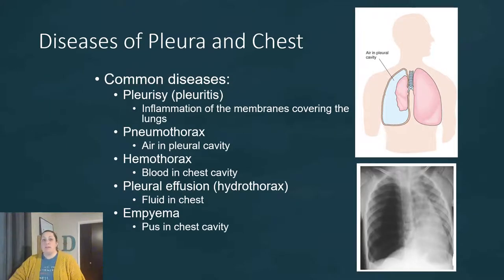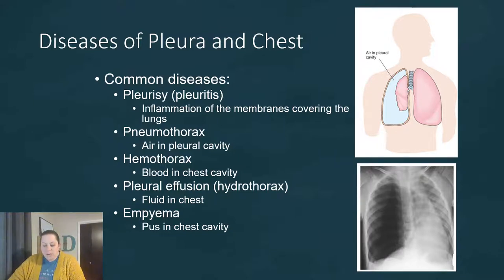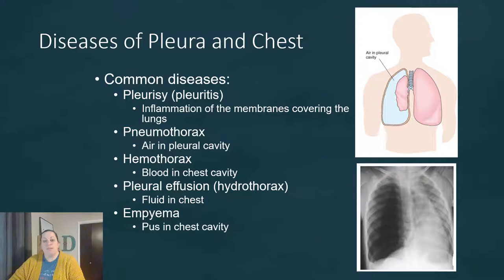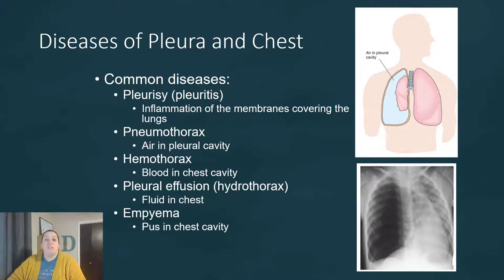The most common pleural disease is pleuritis, or pleurisy, which is inflammation of the membranes covering the lungs. This causes a friction rub — a squeaking noise you can hear when listening to the chest — along with sharp chest pain. Pleuritis involves significant inflammation in the pleural cavity that surrounds the lungs.